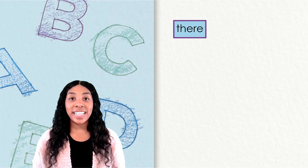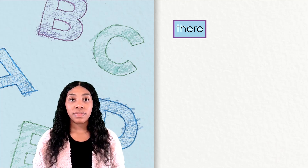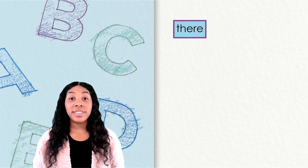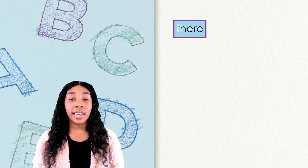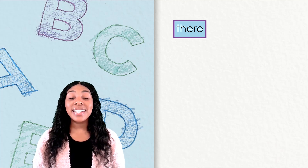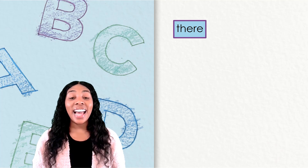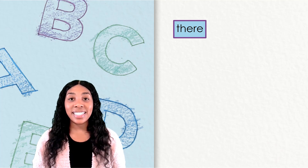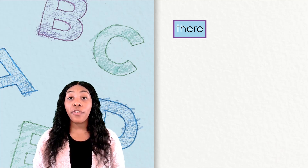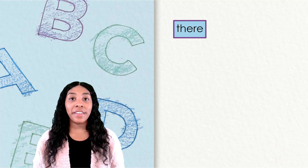What does this 'there' mean? T-h-e-r-e means a place. It is a noun describing where something is, as in this sentence: I saw the dog over there by the fence.